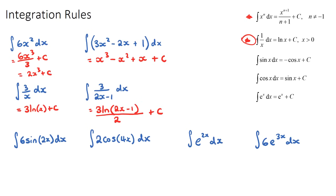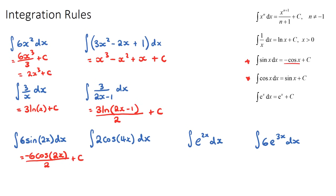Now let's look at sine and cosine. If we're integrating 6 sin(2x), sine integrates to negative cosine — it's the opposite of differentiation. The 6 stays at the front, sine goes to negative cosine giving negative 6 cosine. The bracket stays the same — we don't change the bracket with sine and cosine functions — and the derivative of what was inside the bracket, which is 2, goes on the denominator. So we get negative 6 cos(2x) over 2.